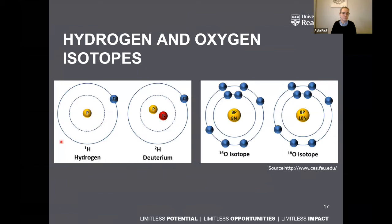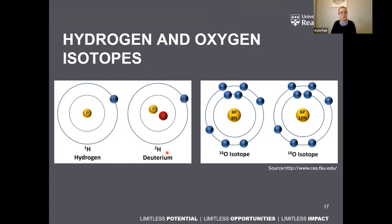For example, there are two hydrogen isotopes. Hydrogen has one proton in the nucleus, so its atomic weight is one — this is the lighter form of hydrogen. Then there's deuterium, which has one proton and one neutron — one plus one makes two — so deuterium has an atomic weight of two and is the heavier form of hydrogen.